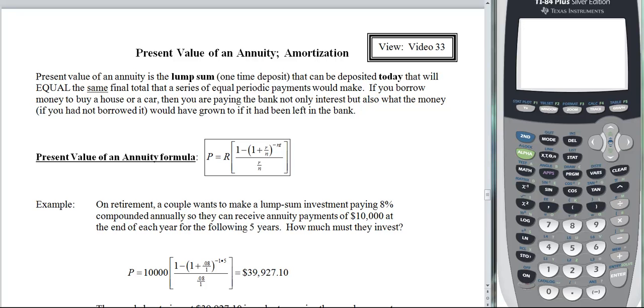Present value of an annuity is the lump sum one time deposit that can be deposited today that will equal the same final total that a series of equal periodic payments would make. Now if you'll notice, remember the P, we've had present value before and that's when there was just a lump sum deposit. So what we're looking at here in this formula, what lump sum deposit would equal the same amount as a series of equal periodic payments.